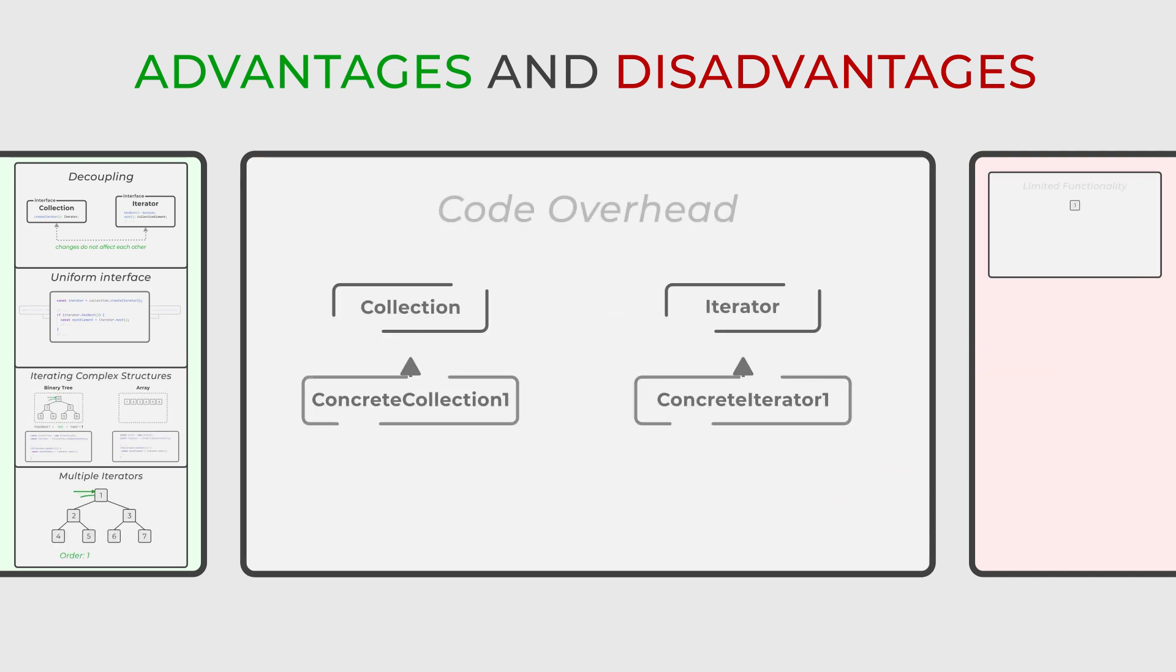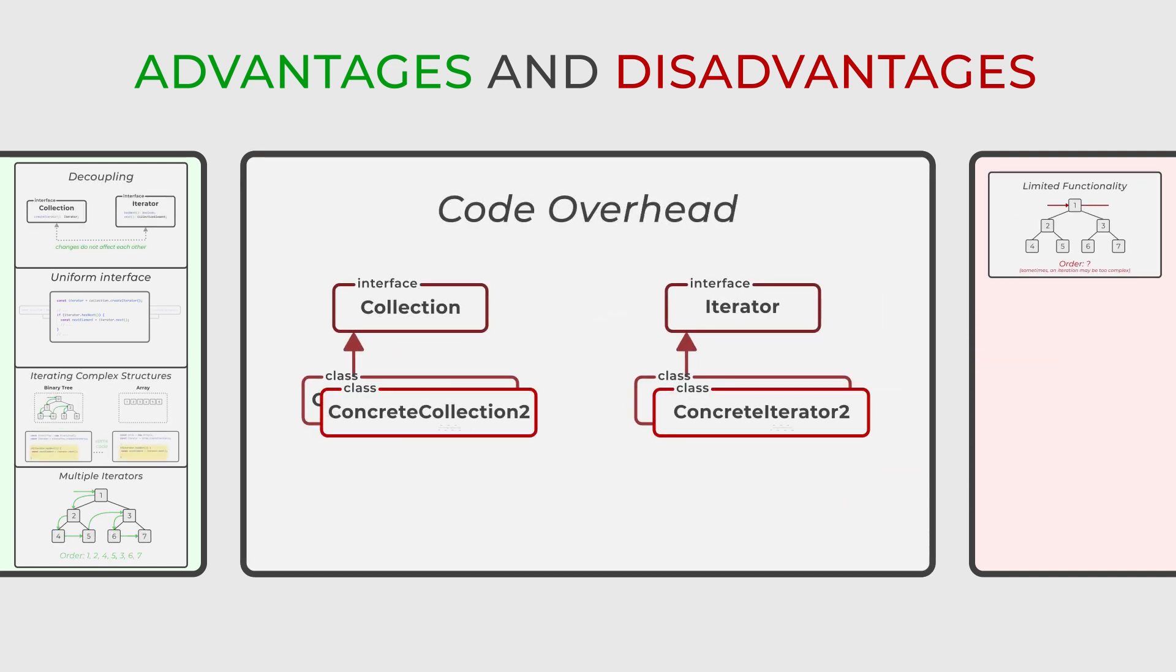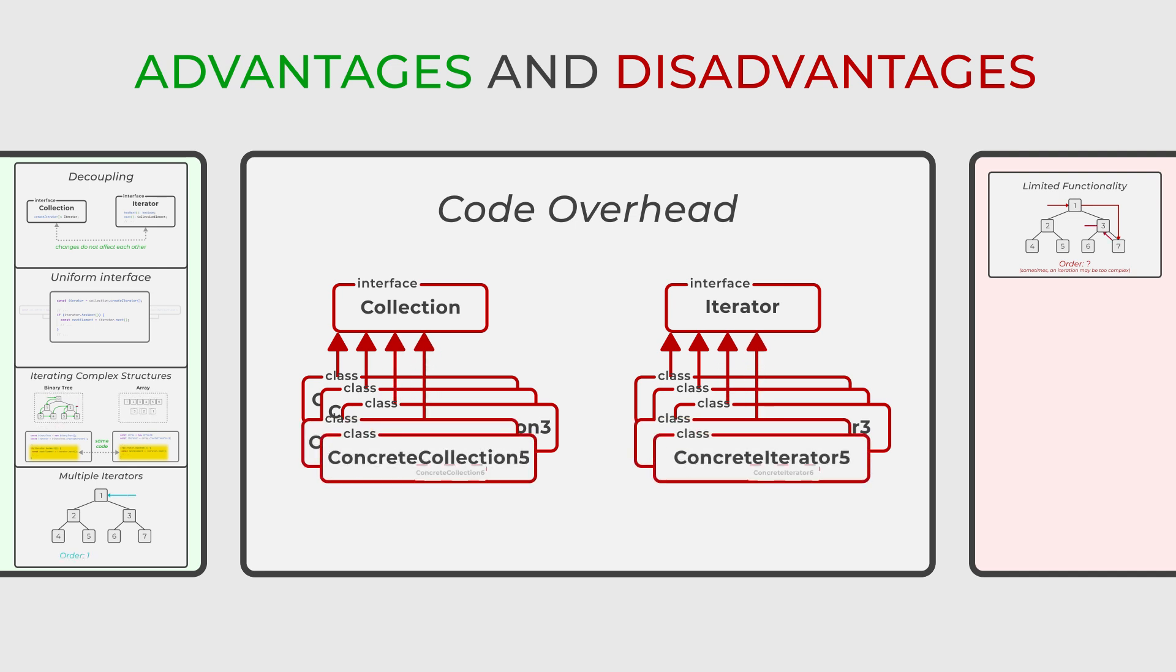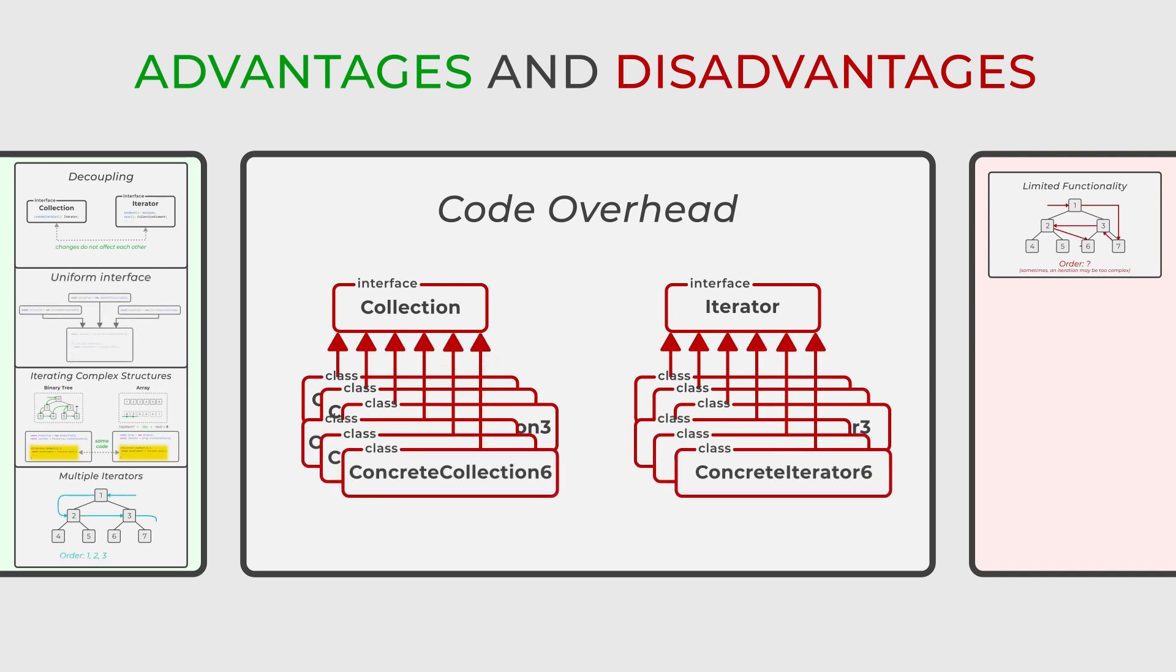Additionally, there is the issue of code overhead. The need to implement custom iterators and aggregators can lead to additional complexity in the code. This factor becomes especially visible in simple scenarios where such complexity may not be justified.